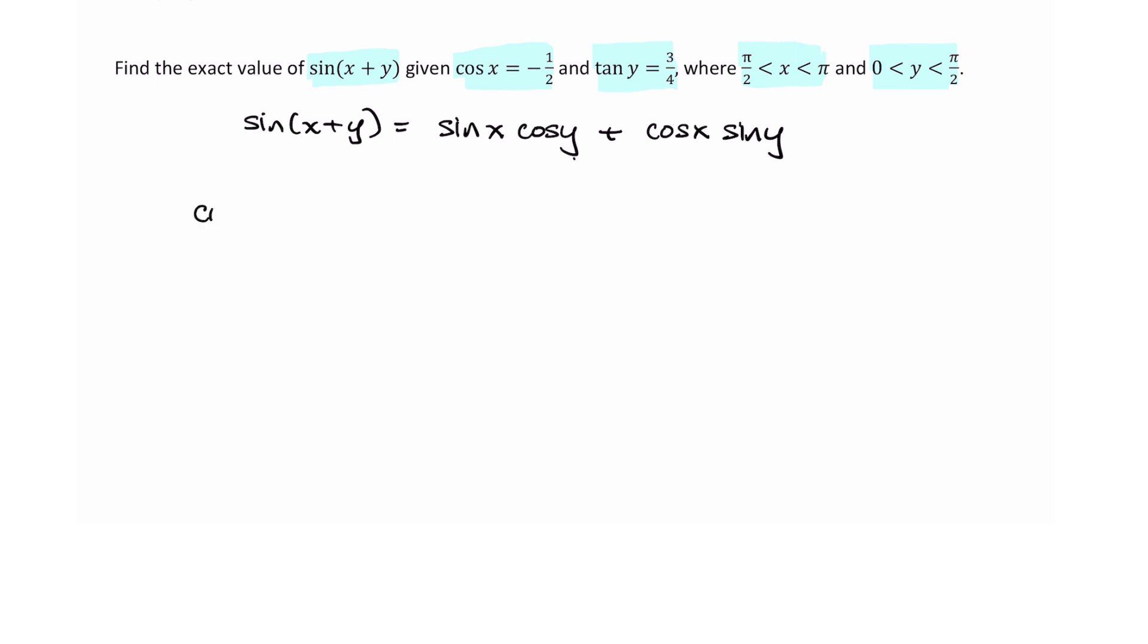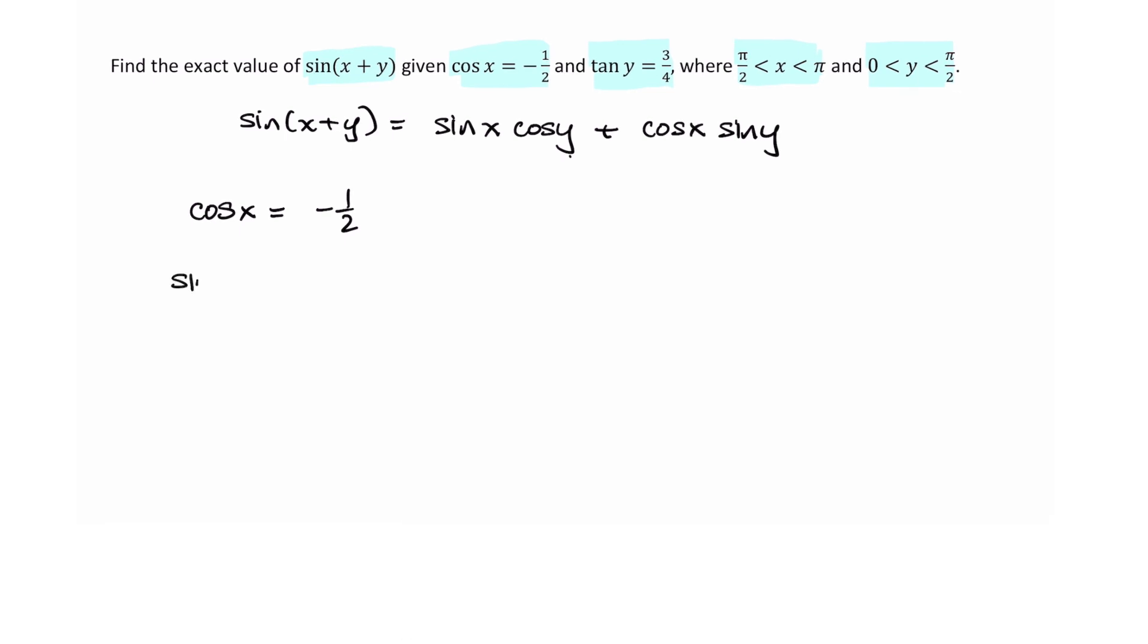Now we know that cosine x is equal to negative one-half. So we could use Pythagorean identity to find sine of x since that's the one that we need. So sine squared x plus cosine squared x equals one is our Pythagorean identity.